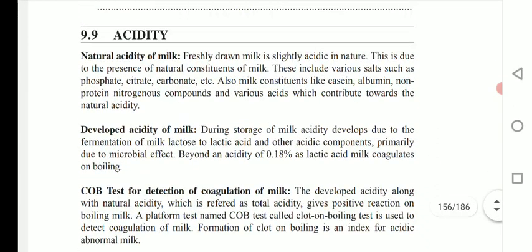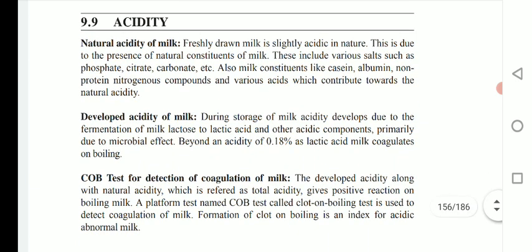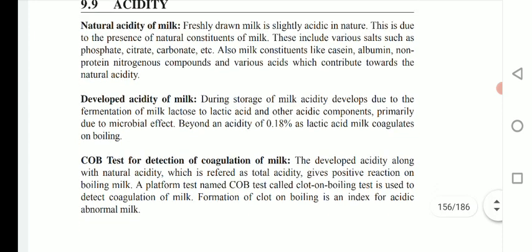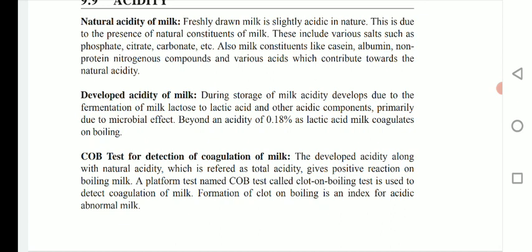The next important physicochemical property of milk is acidity. Milk has natural acidity — freshly drawn milk is slightly acidic in nature. This is due to the presence of natural constituents such as phosphates, citrates, and carbonates. Milk constituents like casein, albumin, non-protein nitrogenous compounds, and various acids also contribute towards natural acidity.